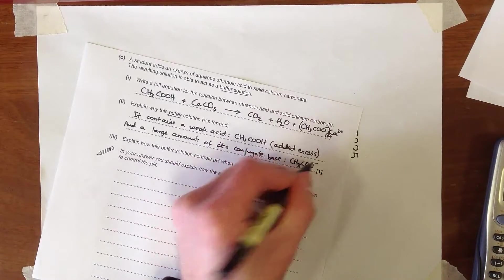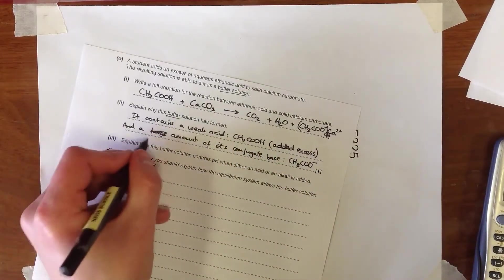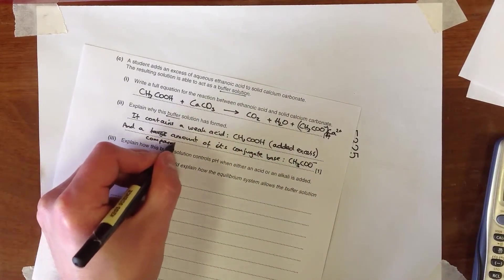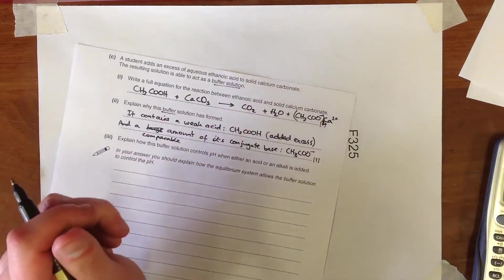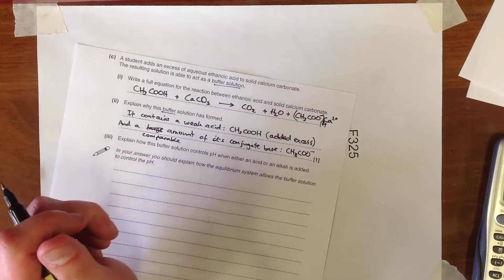CH3COO- the ethanoate ion. Well, it's probably better to put here a comparable amount, because it has to be within a factor of 10 in order to really have a reasonable buffer. A comparable amount of its conjugate base.